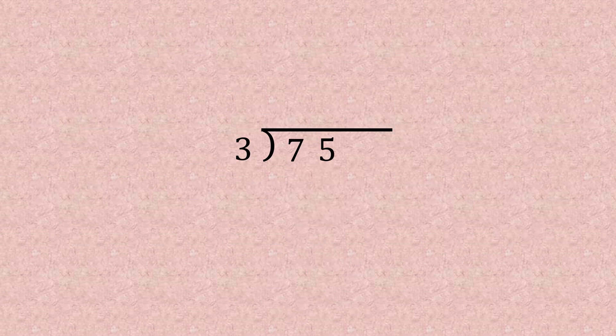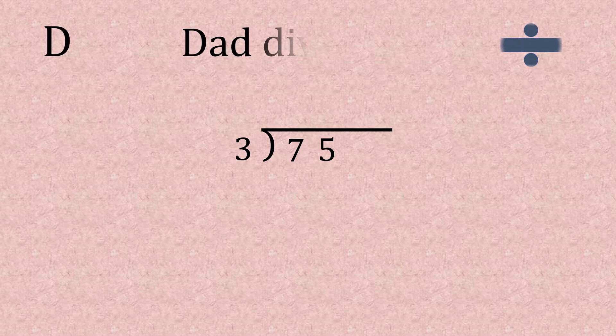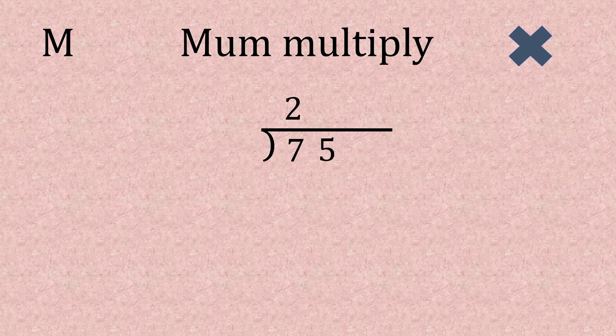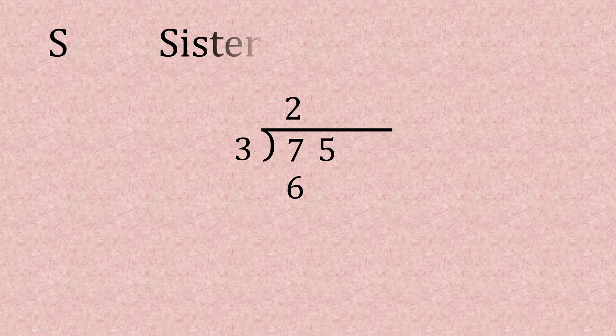Long division: 75 divided by 3. So D for divide, that's what we start with. 7 divided by 3 gives us 2, write that down on the top line. Then we multiply, M for multiply. 2 multiplied by 3 is 6, pop that underneath.